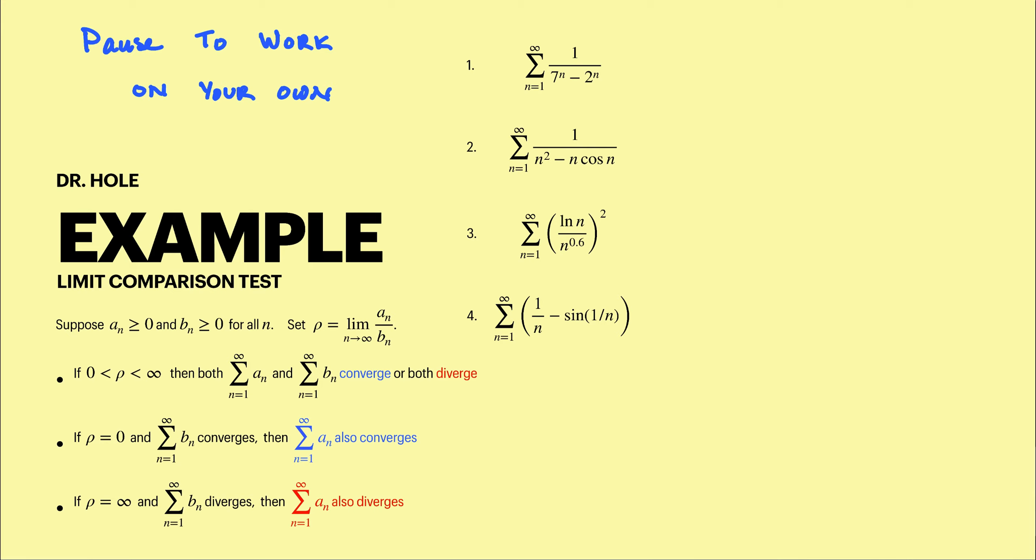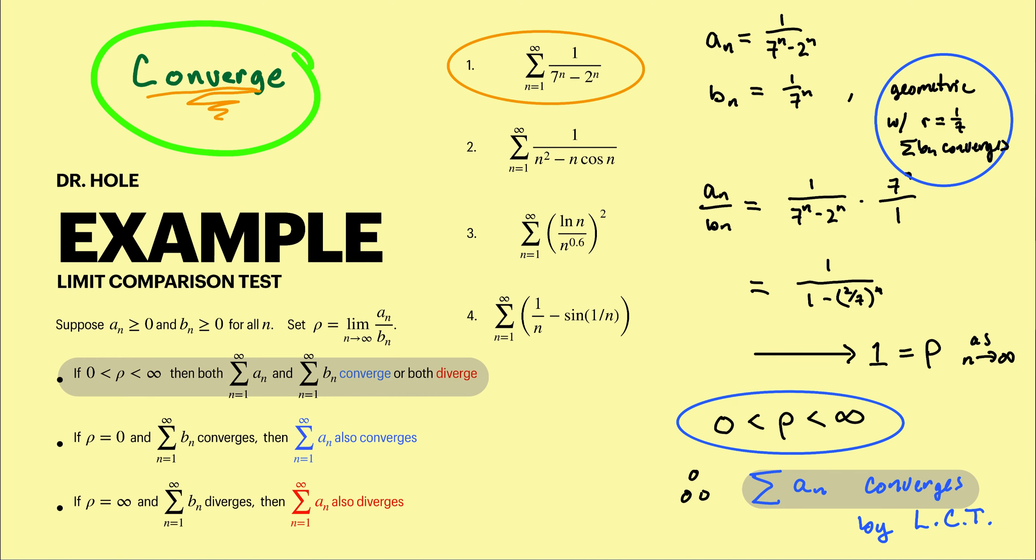So on the first one, noticing that seven to the n is much larger than two to the n and throwing away two to the n, if the series is defined by this sequence it would converge as a geometric series with r equal one over seven. So for the first guy, let's make the guess that it's going to converge. Take the associated sequence, name it a sub n, see that it's similar to b sub n, one over seven to the n, and that the b sub n's define a convergent series.